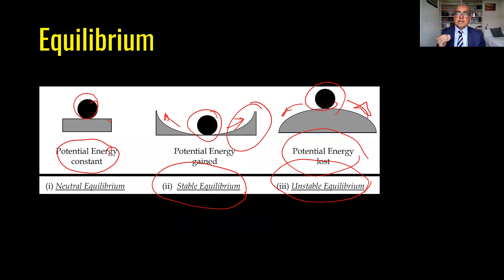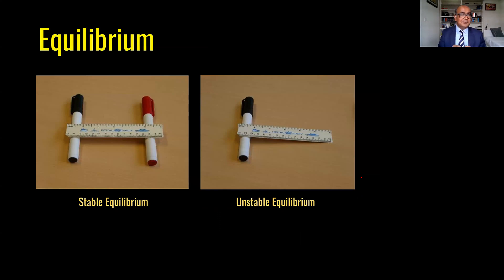We try most of the time in any civil and mechanical system that the body remains in stable equilibrium. This is a very good example of a stable and unstable equilibrium. A marker is supporting a ruler. On left side it is in stable equilibrium. On right side one side is supported on marker and other side is supported on flat floor. And this is not a stable equilibrium.